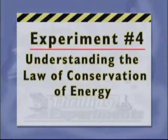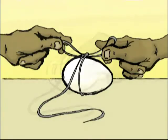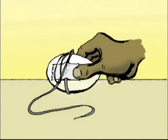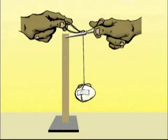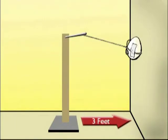In our next experiment, we will use a pendulum to illustrate the law of conservation of energy. First, tie the string around the egg. Use the sticky tape to make sure the egg is securely attached to the string. Next, connect the string to a ring stand or similar support. Make sure that the egg will clear the surface of the table as it swings. The idea is to allow the egg to swing freely without any obstructions. Now, you need to correctly position your experiment. Place the pendulum near the wall.